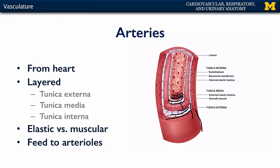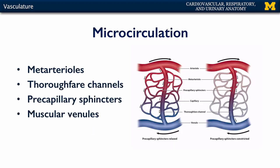Arteries feed into arterioles, which then feed into thoroughfare channels that control blood into capillaries. Those capillaries can then go back into thoroughfare channels, into muscular venules, into veins, and return to the heart. Microcirculation encompasses all of the vessels between the arteriole and the venule — from the metarteriole through the thoroughfare channel into the venule.